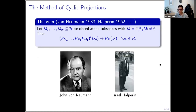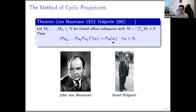Here's the classical result about the method of cyclic projections. If we have closed affine subspaces — von Neumann and Halperin originally proved it for linear subspaces, but the affine result follows by a translation argument — if you take those subspaces and look at the sequence generated by cyclically applying the individual projection operators, then you converge strongly to the solution of the best approximation problem, which is the nearest point to x-naught in the set M. Von Neumann did the result for two sets; Halperin, a student of von Neumann, extended it to finitely many sets.